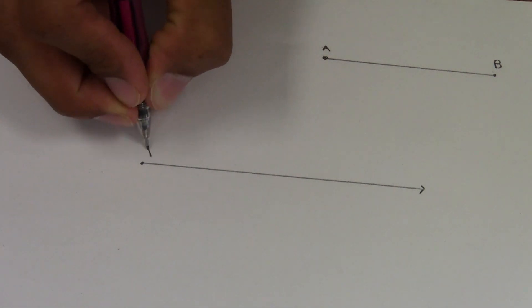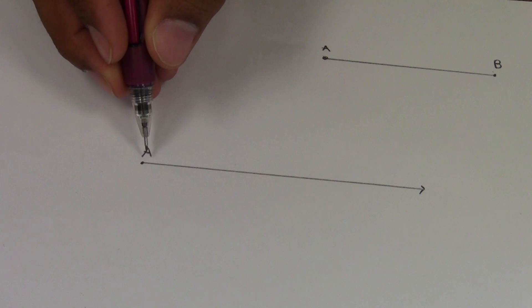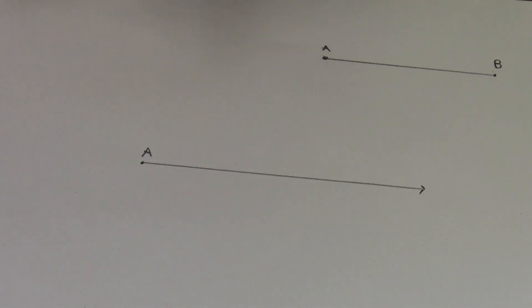I have an endpoint here. I'll call this A, and I'm going to use my compass to measure this line segment. What I'm going to do is put my working end on A and open it until I get to B. So I know how open this is.